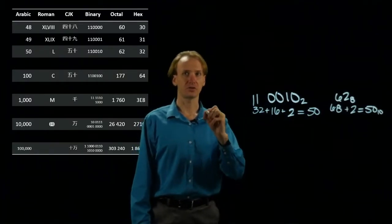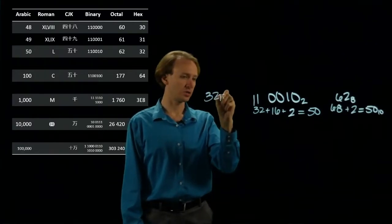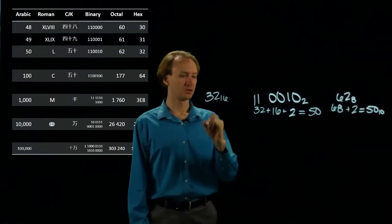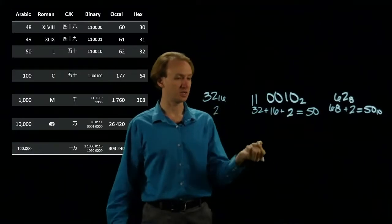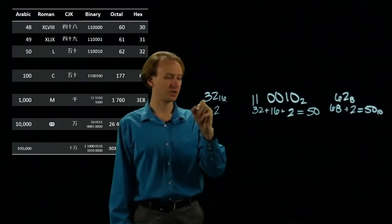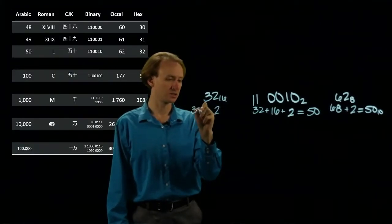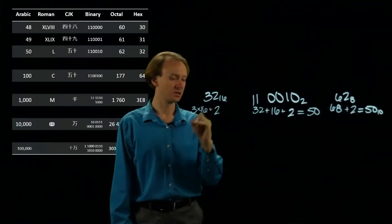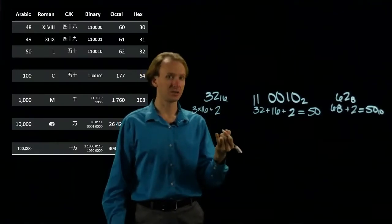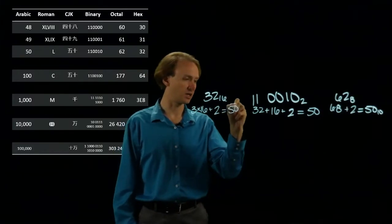Going the other way, we have 32 in hexadecimal. 2 in hexadecimal is also 2 in decimal. The 3 though is 3 times 16. 3 times 16 is 48. 48 plus 2 is 50 again.